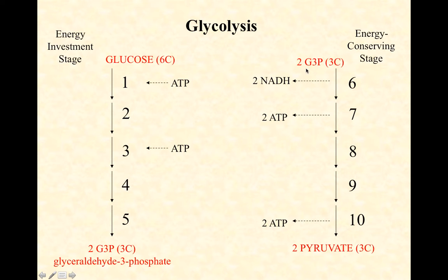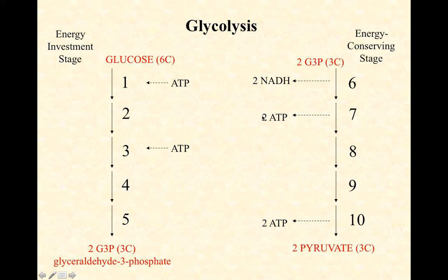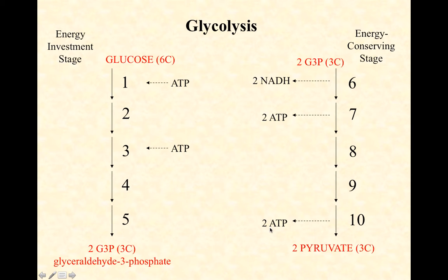In the second half — the energy conserving stage — we take our two G3Ps and rearrange them into two pyruvates. These are already three-carbon molecules being rearranged into three-carbon molecules, but these rearrangements are energy-yielding. Our initial two phosphates come off and drive phosphorylation of two ATPs by substrate level phosphorylation, and then in step 10 we get two more ATPs out.